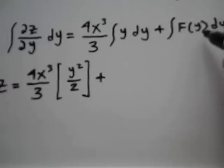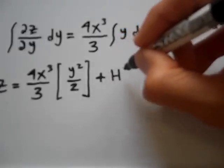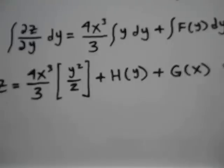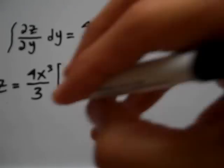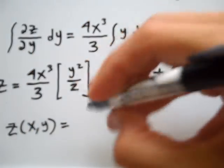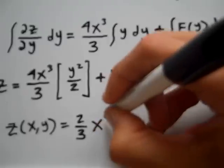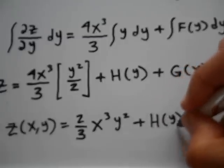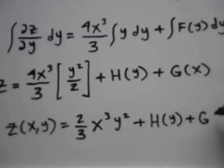Since I don't know what this arbitrary function of y is, neither do I know what its integral is. So I'll just call the integral of f(y) as h(y). I'm also going to introduce an arbitrary function of x, which I will call g(x) — it's like the constant of integration, even though it's not really a constant; it's just some arbitrary function. So the general solution, cleaning everything up and reducing fractions, is z(x, y) = (2/3)x cubed y squared plus h(y) plus g(x).